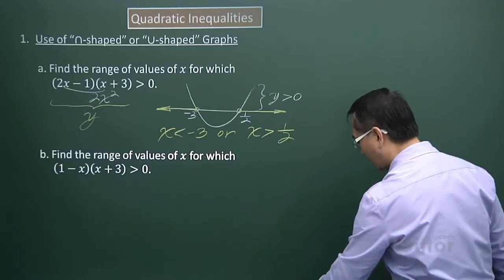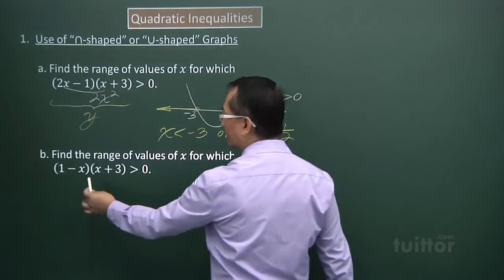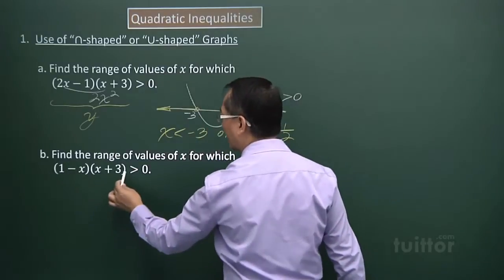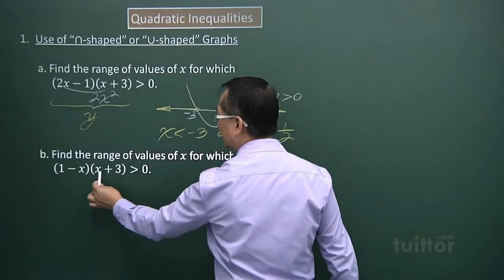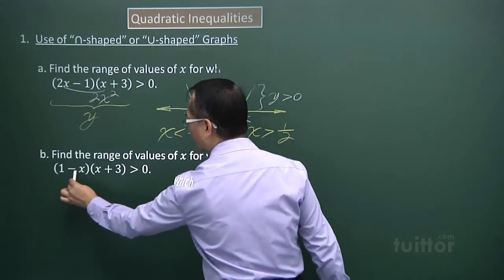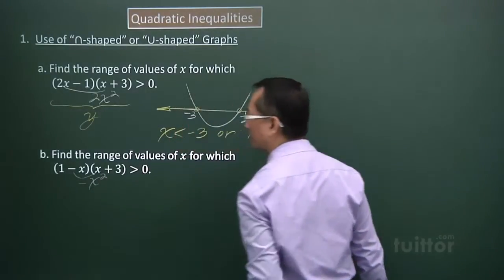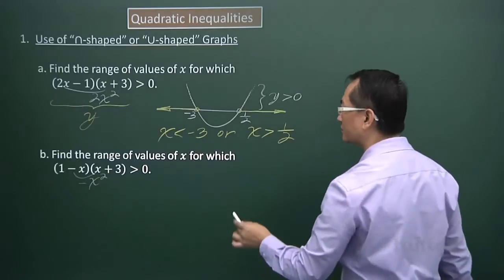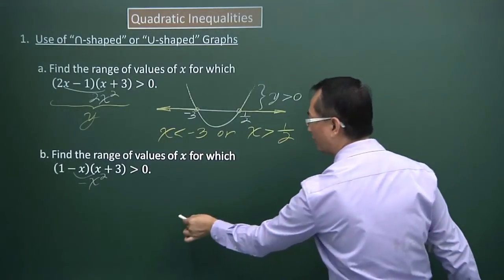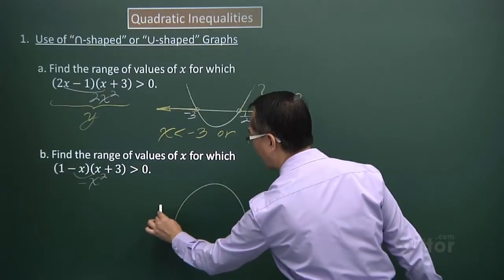For the next one, if I look at the X term in the first factor — a negative X — and in the second factor the X term, the product will be a negative X squared. So I will be looking at an inverted U-shape graph, and this is a tool to help me obtain the inequalities involving X.